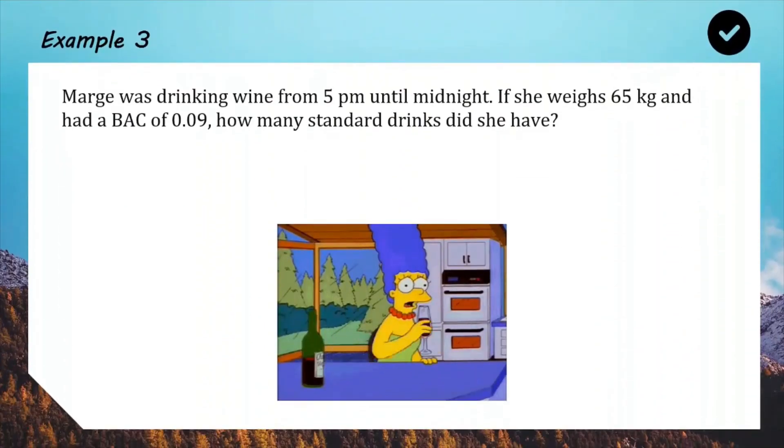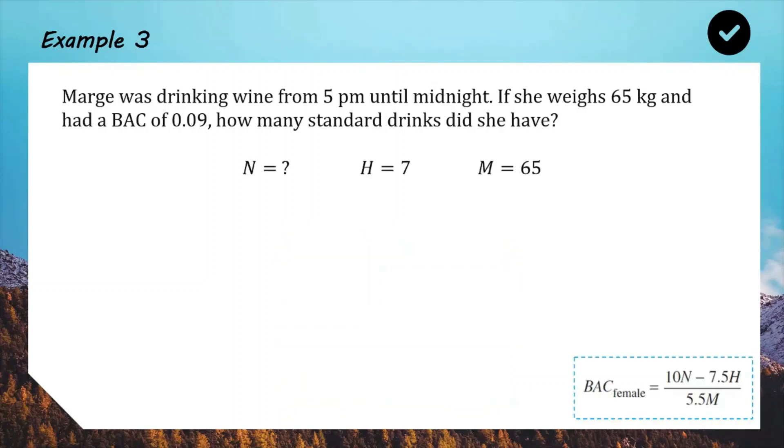And for our last example, we have Marge drinking wine from 5 p.m. until midnight. So that must be about 7 hours. She weighs 65 kilograms, and she had a BAC of 0.09, which is pretty high. Definitely can't drive in any country that I'm aware of. How many standard drinks did she have? So this is an interesting question that applies your equation skills, because we have the BAC formula for a female. Again, the exact same, but instead on the bottom, it being 6.8, now it's 5.5. And with this one, we aren't calculating a BAC. We've been given a BAC, and we're trying to work backwards to solve for number of drinks, N.